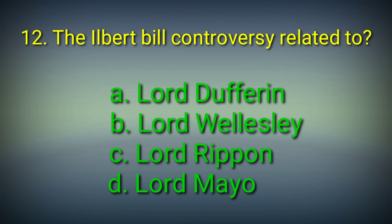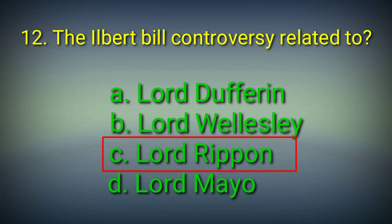12th question: The Ilbert Bill controversy is related to — Options: A. Lord Dufferin, B. Lord Wellesley, C. Lord Ripon, D. Lord Mayo. Answer: Option C. Lord Ripon. The Ilbert Bill controversy is related to Lord Ripon.